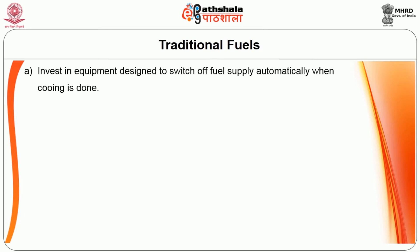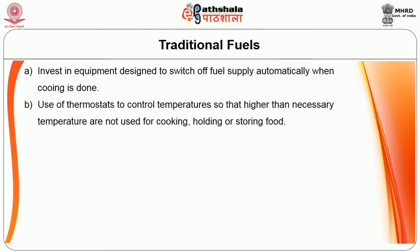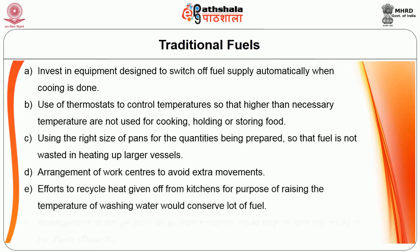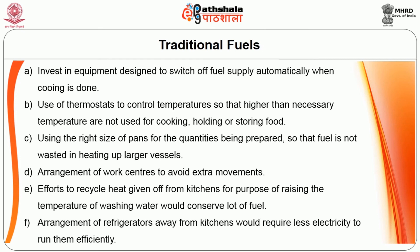Possible ways of saving energy in a food establishment include: using equipment designed to switch off fuel supply automatically when cooking is done; using thermostats to control temperature so that higher than necessary temperatures are not used for cooking, holding, or storing food; using the right size of pans for quantities being prepared so that fuel is not wasted; arranging work centres to avoid extra movements; and recycling heat from the kitchen to raise the temperature of washing water. For example, arranging refrigerators away from kitchens would require less electricity to run them efficiently.